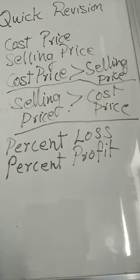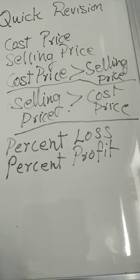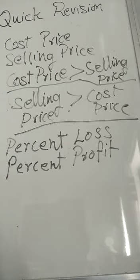So this was the chapter — profit and loss. Profit and loss mainly happens in business, in transactions, in trading. Some people buy something at a low cost from one place and then sell it at a higher cost somewhere else. Also farmers — when they grow vegetables or fruits on a farm and sell them in the market — in all these cases profit and loss comes into play.